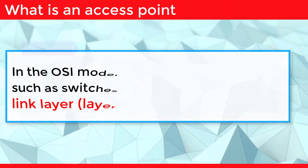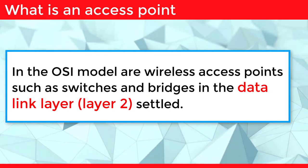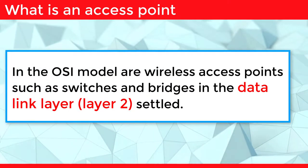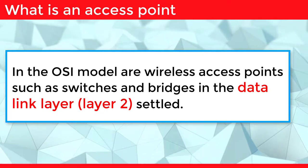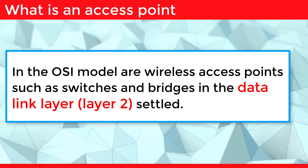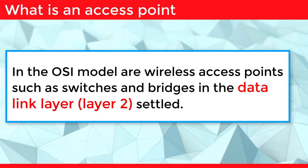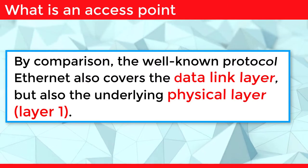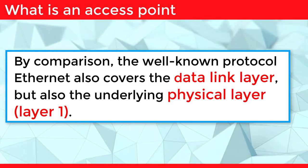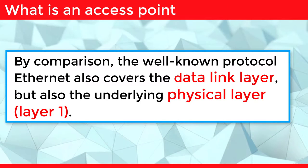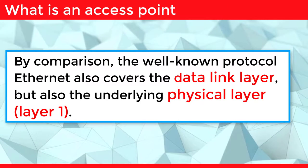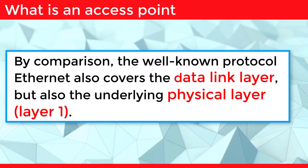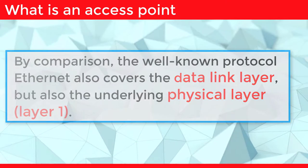In the OSI model, wireless device points such as switches and bridges are situated in the data link layer, layer 2. By comparison, the well-known protocol Ethernet also covers the data link layer but also the underlying physical layer, layer 1.